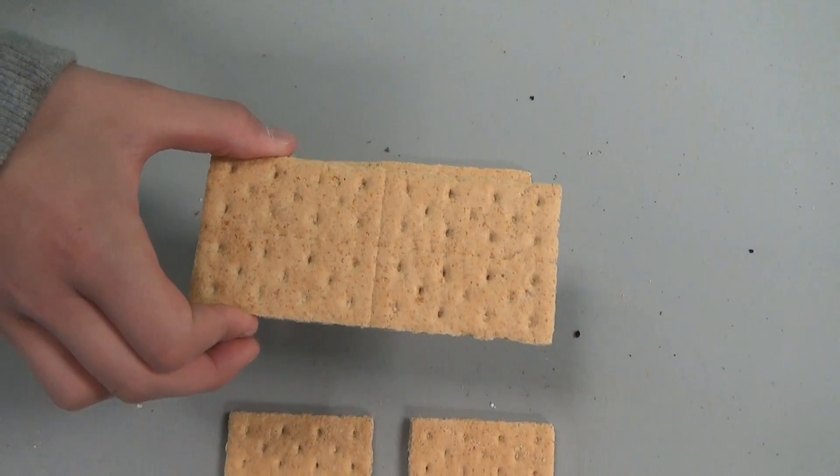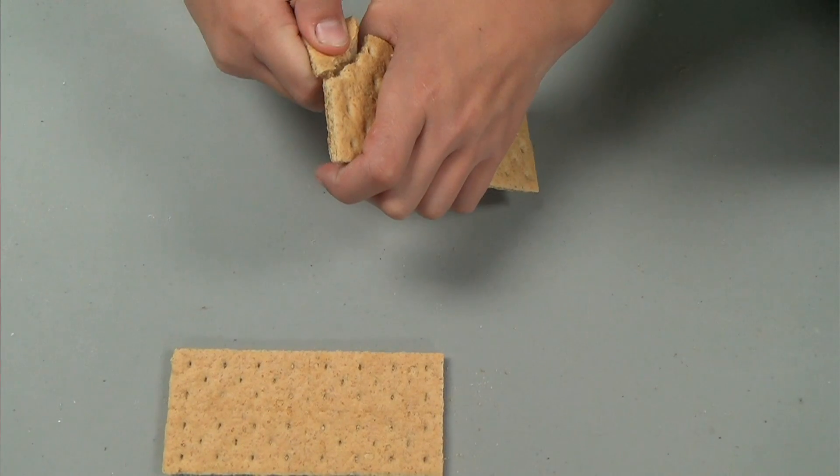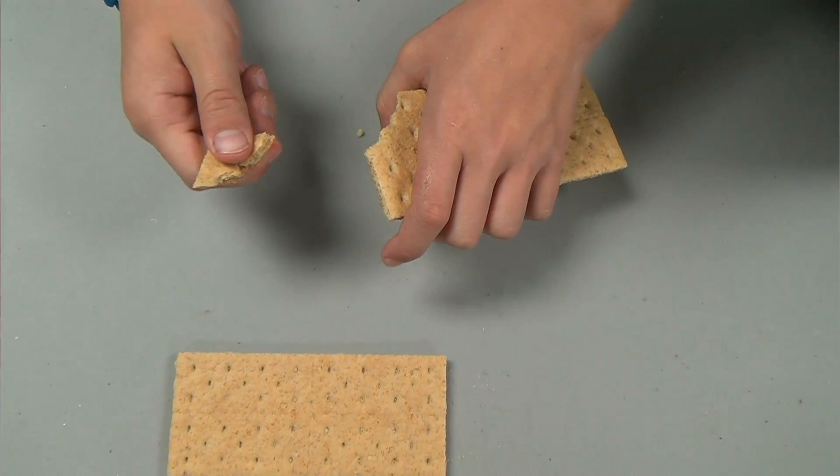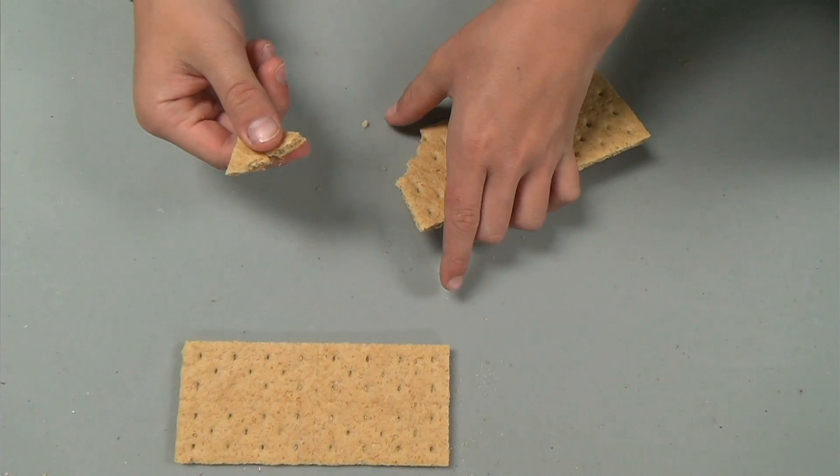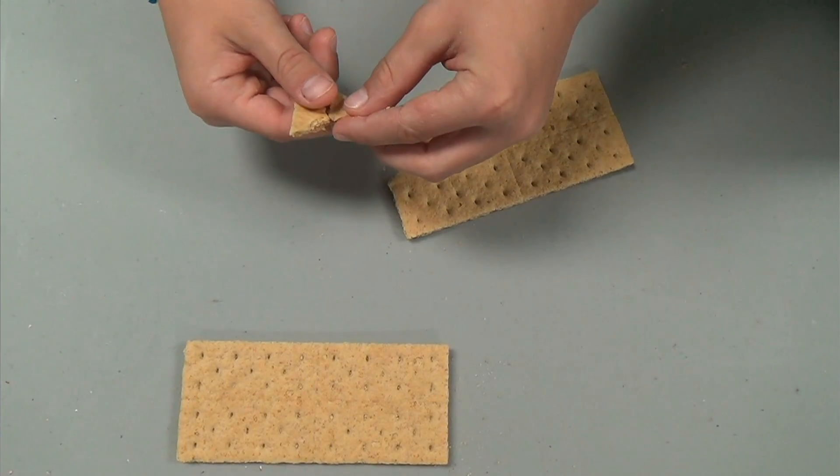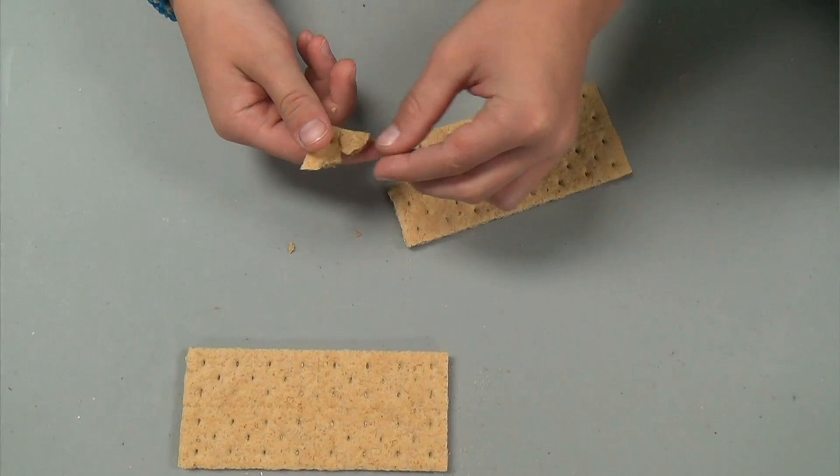What if I break it like this? That would be two parts, but not equal parts. So it wouldn't be one half. The smaller part would be less than one half of the graham cracker.